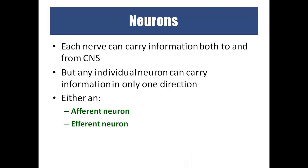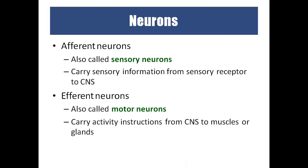Neurons carry information to and from the brain and spinal cord. There are two types: afferent (sensory) neurons, which carry information from sensory receptors towards the central nervous system, and efferent (motor) neurons, which carry information from the central nervous system towards the organs, muscles, or glands.